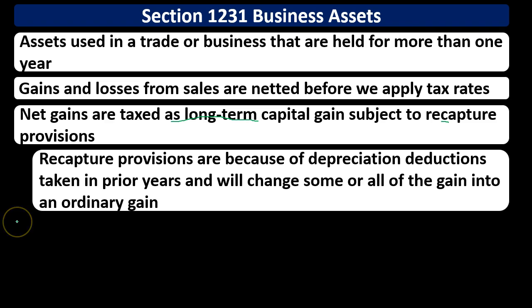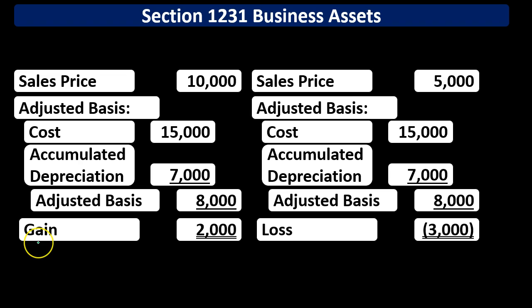Recapture provisions arise because of depreciation deductions taken in prior years, and will change some or all of the gain into ordinary gain. Consider a situation where we're selling Section 1231 property: the sales price is $10,000, the original cost is $15,000, and accumulated depreciation from prior years is $7,000, giving an adjusted basis of $8,000. The gain is therefore the sales price minus the adjusted basis, which is $2,000.